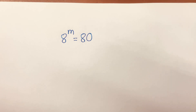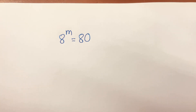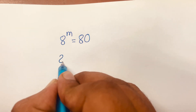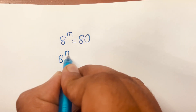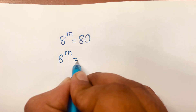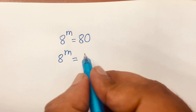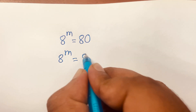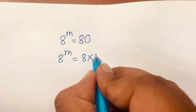How to solve 8 power m is equal to 80. First of all, 8 power m is equal to 80, which can be written as 8 times 10.